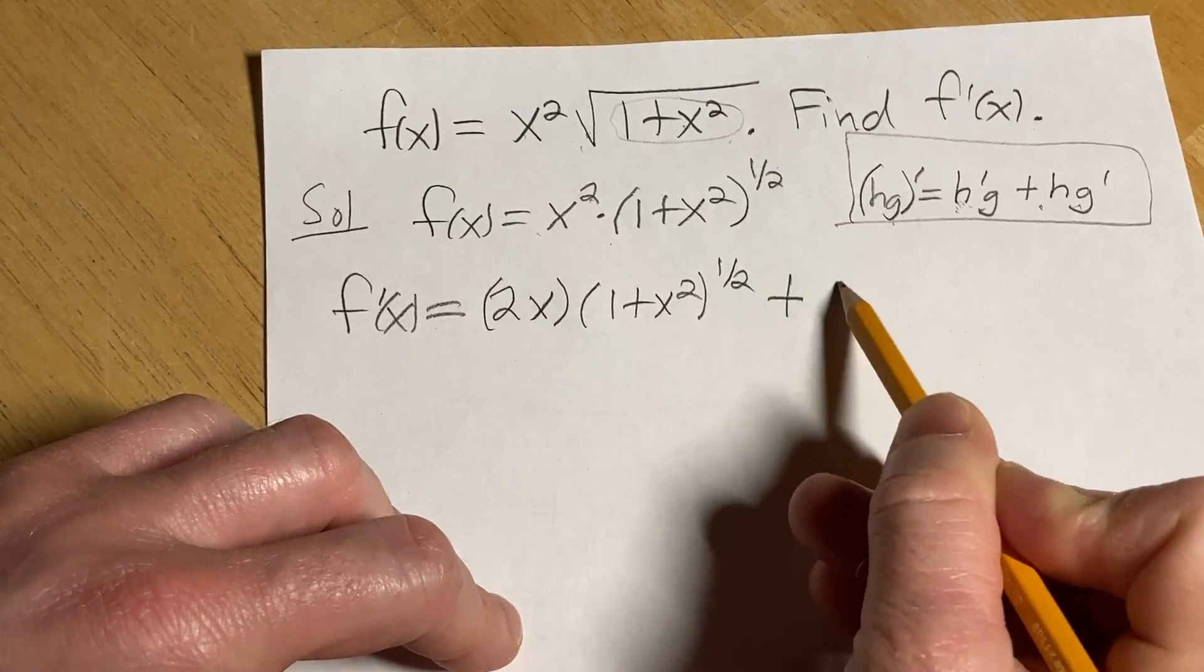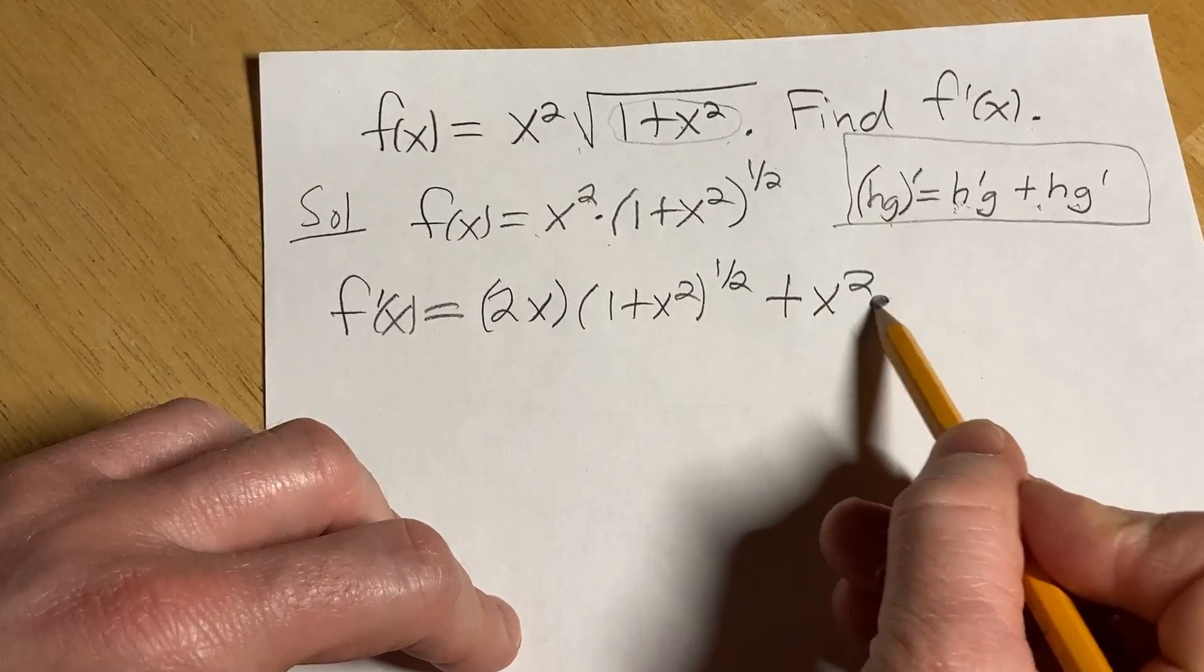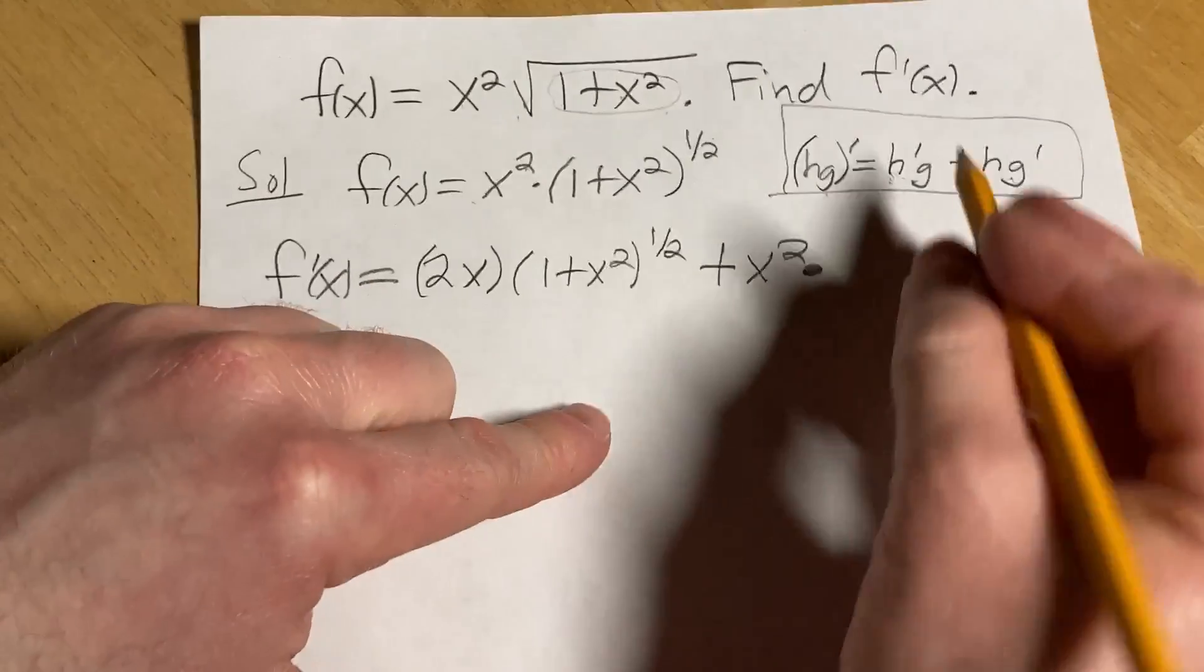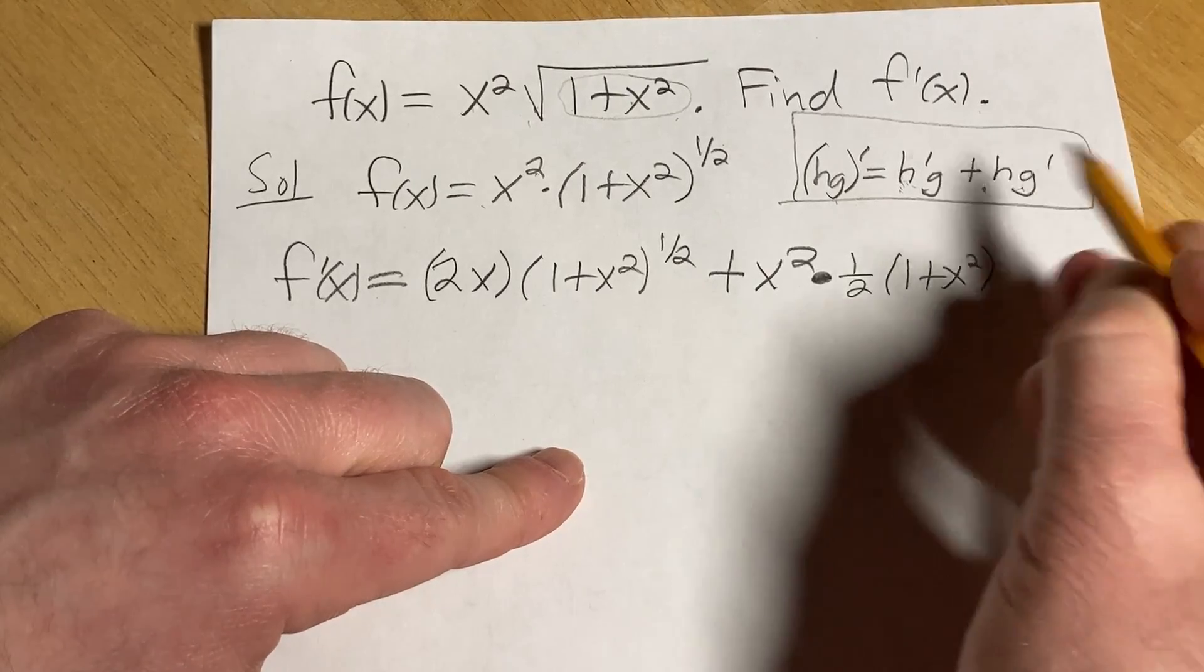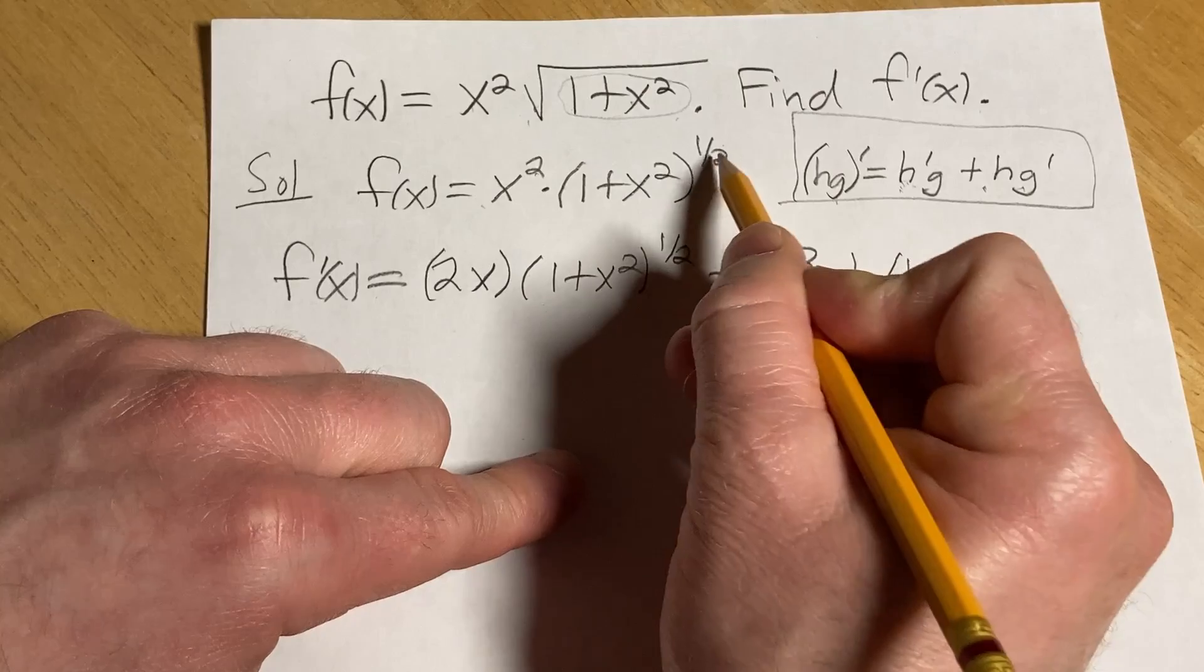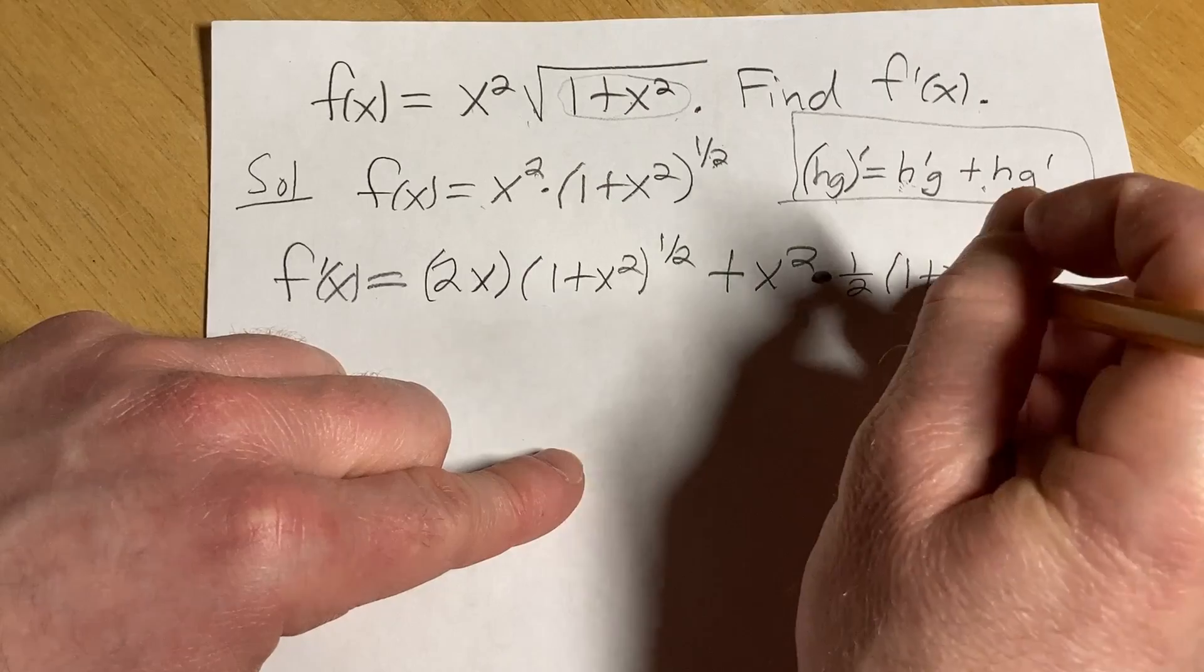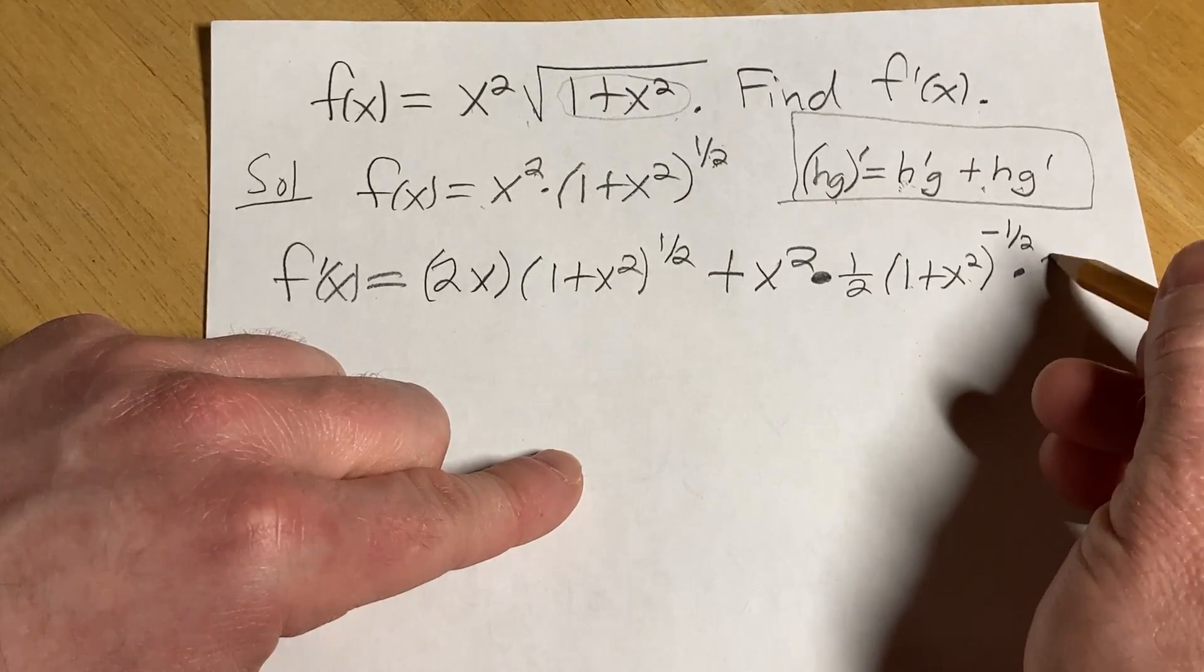Plus the first, so x squared, times the derivative of the second. So this is something to a power. So we're going to use the chain rule. We'll bring down the 1 half. Take the derivative of that outside function. Leave the inside untouched. Subtract 1 from the exponent. So 1 half minus 1 is really 1 half minus 2 halves which is negative 1 half times the derivative of the inside function. The derivative of 1 is 0. The derivative of x squared is 2x.